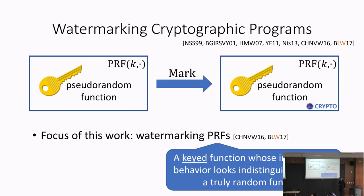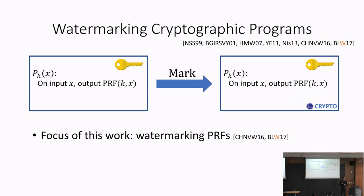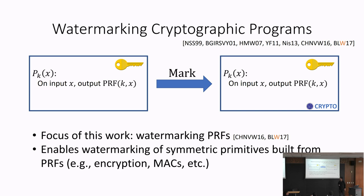In this talk, we focus on cryptographic functions — specifically, watermarking pseudorandom functions. A pseudorandom function is a keyed function whose input-output behavior is indistinguishable from that of a truly random function. When we say watermarking a PRF, we mean watermarking a circuit that has a PRF key embedded inside it, which takes an input and evaluates the PRF on that input. We care about this because PRFs are the building blocks of symmetric cryptography, enabling watermarking for encryption, authentication codes, and so on.